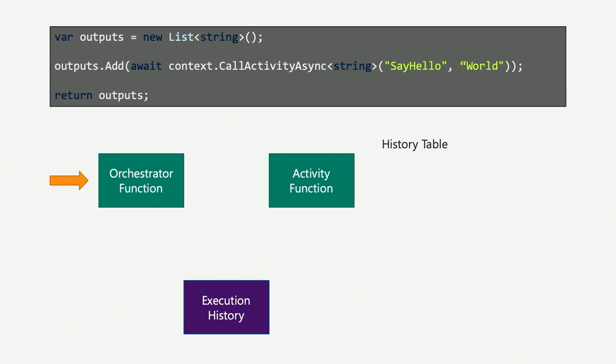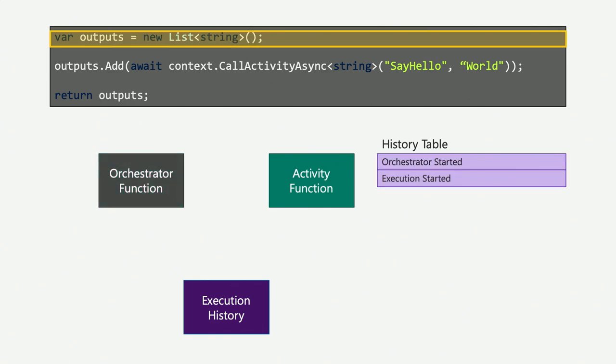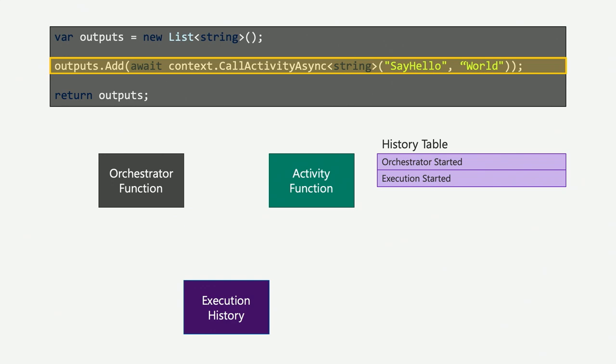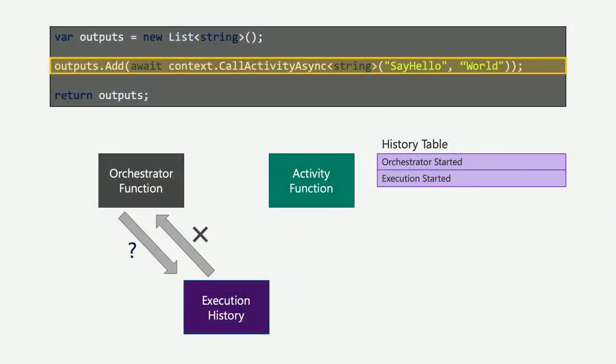Let's walk through it. Say I trigger the function and say start my orchestration. The function wakes up and starts evaluating the first line of code — create a new list outputs. It gets to the next line and durable functions sees the await keyword. When it sees await it knows there's some activity or task to perform. Because it might be resuming from a previous state or crashed from a previous state, it doesn't immediately evaluate that code. It goes and asks durable functions: have I already done this? Have I already said hello to world?